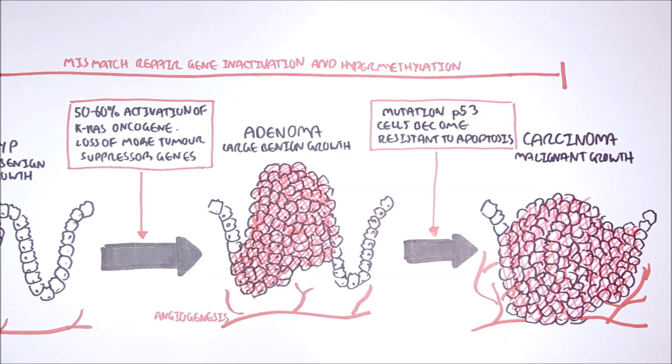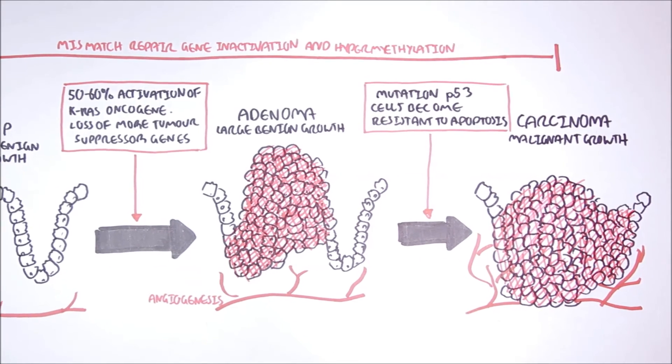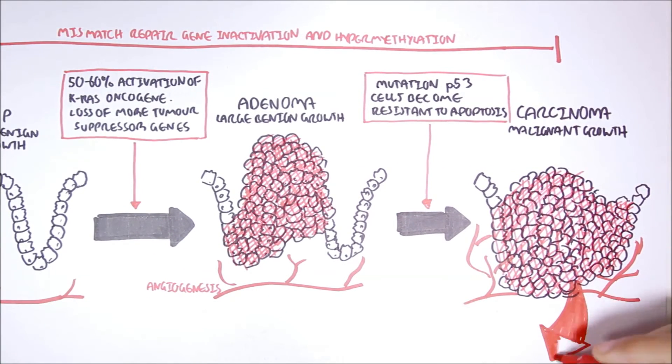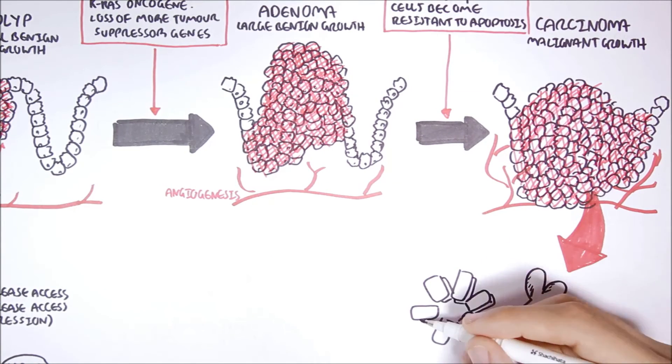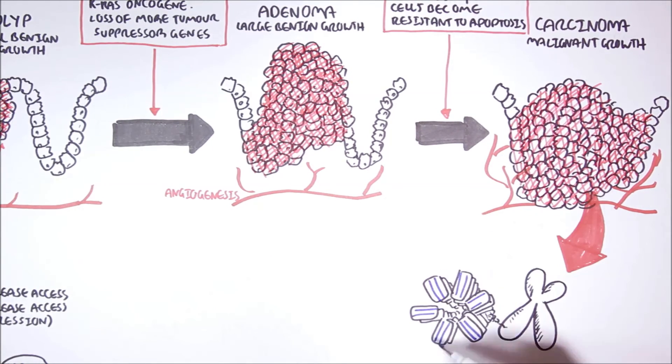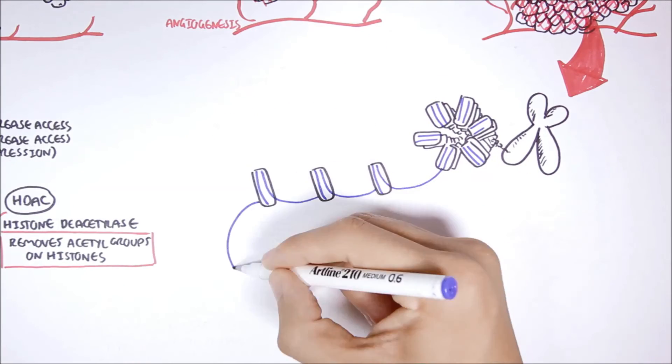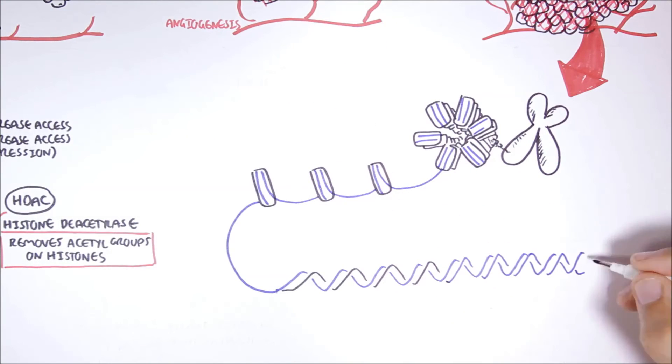Now that we're at this stage, let us look at the genetic material of this cancer cell. So, here we have the chromosome again, the histone fibers, and the histone, and then the DNA. The DNA, which has, remember, the promoter and non-promoter regions.